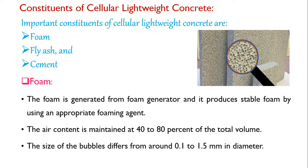The size of the bubbles differs from 0.1 mm to 1.5 mm in diameter. Here you can see this is a cellular lightweight concrete, and you will find the pores. These pores are due to the foaming agent only. Here you can see a bigger, zoomed view of the cellular concrete.